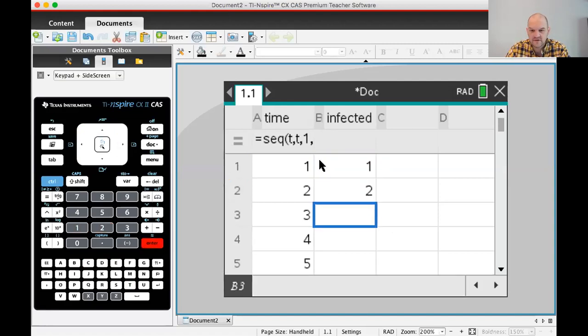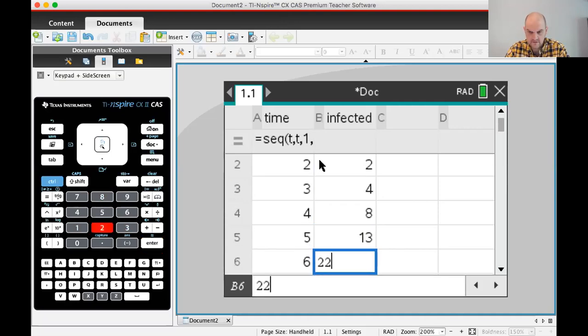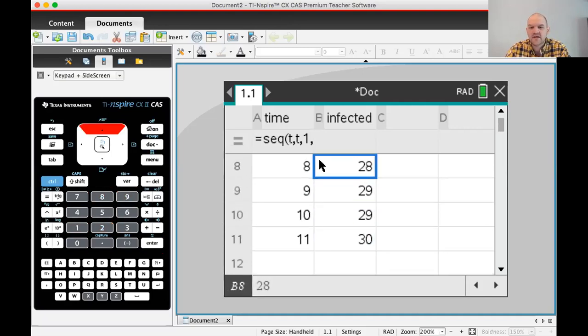And then 1, 2, I'm just typing what's in the notes. So it's 4, 8, 13, 22, 26, 28, 29, 29, and 30. All right. So this is our data.